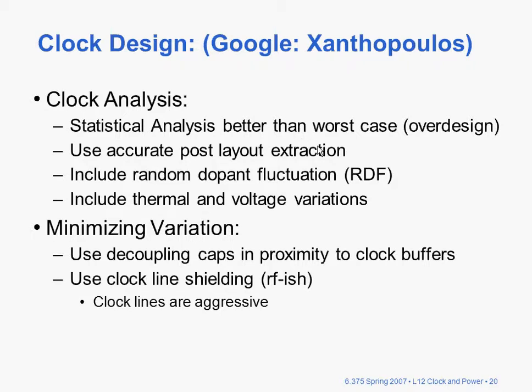That's the notion of back-end notation discussed before. You should also include random doping fluctuations — these devices are so small they're no longer uniformly doped and that model doesn't hold anymore. You'd also have to include thermal and voltage variations, which are a consequence of the activity of the devices around the particular piece of logic. In any event, you try to minimize variation by using decoupling caps to smooth out the clock signals, and you may even use some clock shielding to reduce coupling.